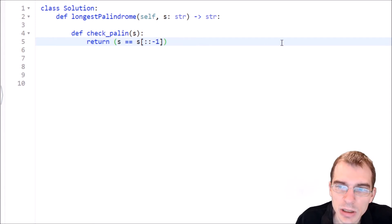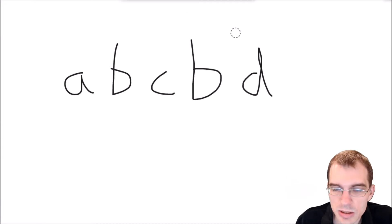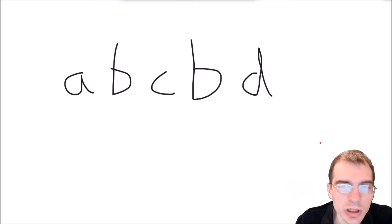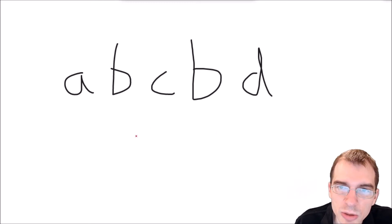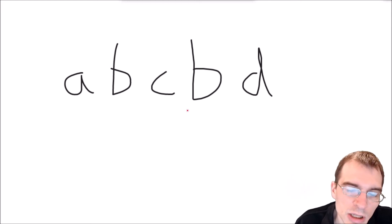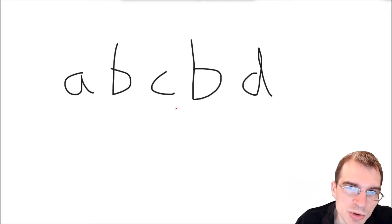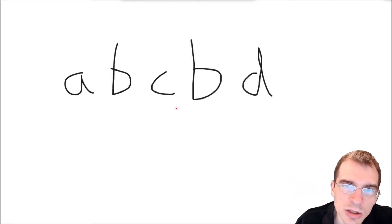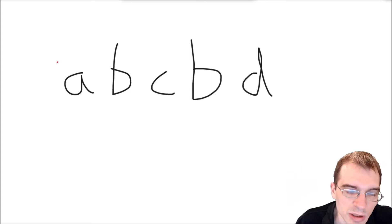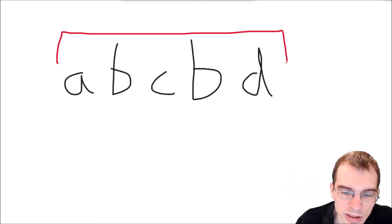Let's pull over to the whiteboard and think about how to solve the greater problem. I've written down a string that has a palindrome in it, but the whole string isn't a palindrome. One way to approach this is to simply check all possible substrings and whether they are palindromes, then return the longest one. If we check the longest substrings first, as soon as we find a palindrome we can return it immediately, since shorter ones come later.